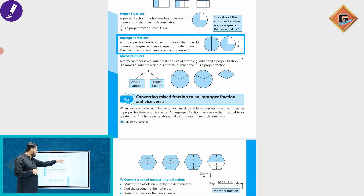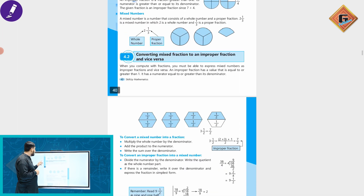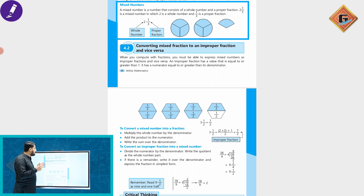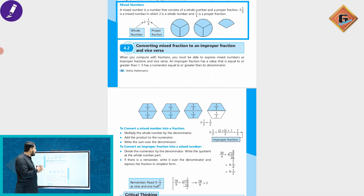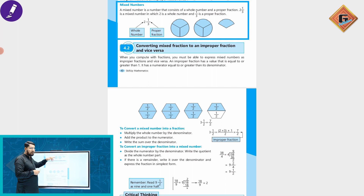For example, the fraction 7 over 4 is an improper fraction since 7 is greater than 4. A mixed number is a number that consists of a whole number and a proper fraction, such as 2 and 1/3, where 2 is the whole number and 1/3 is the proper fraction.